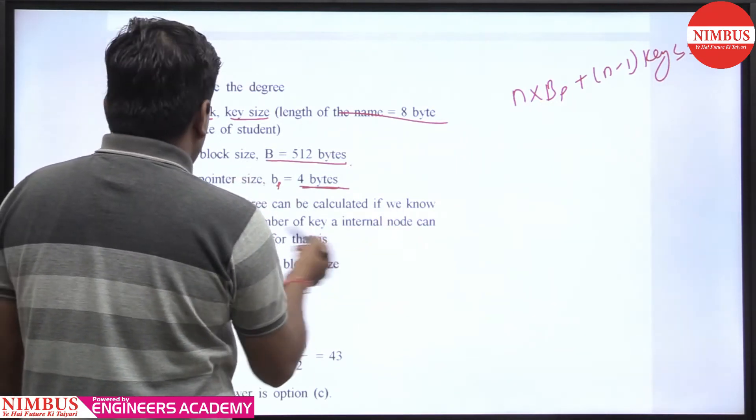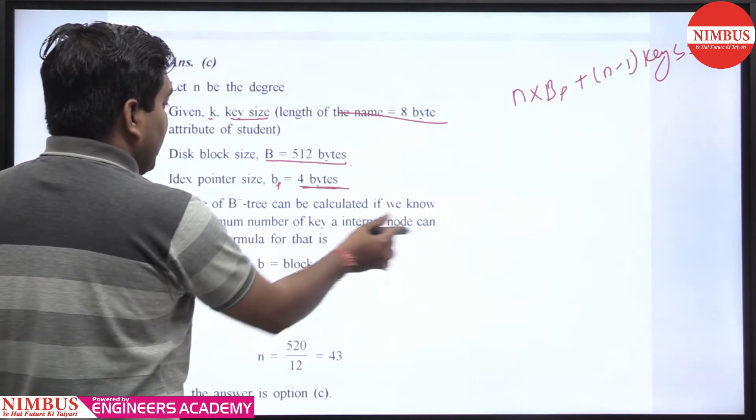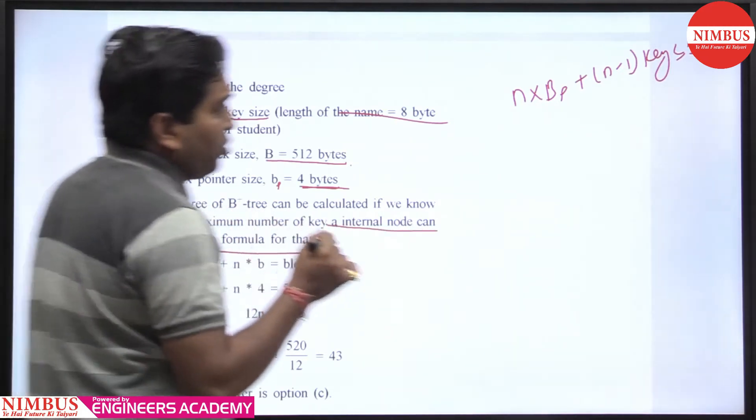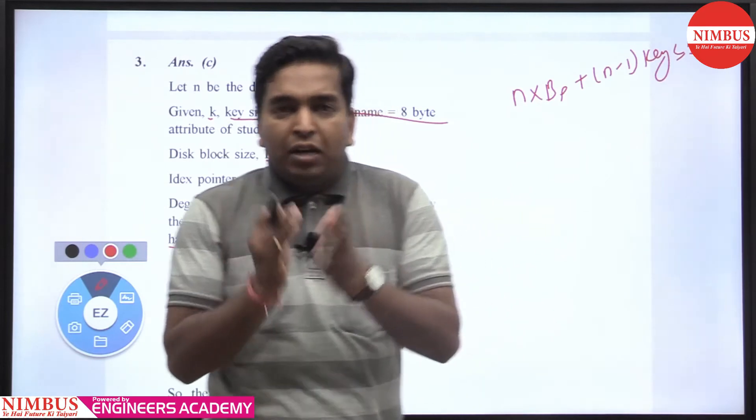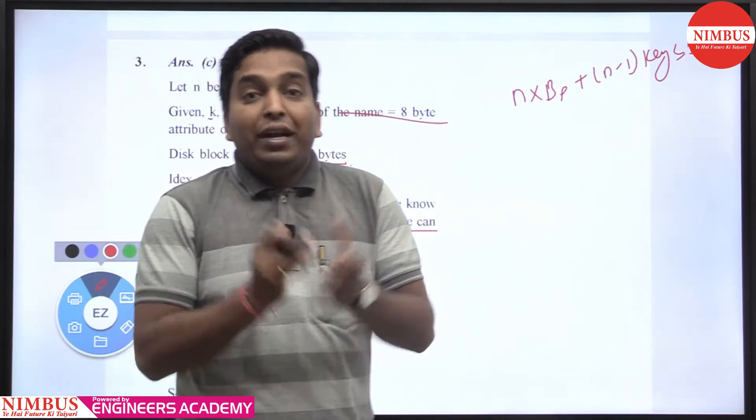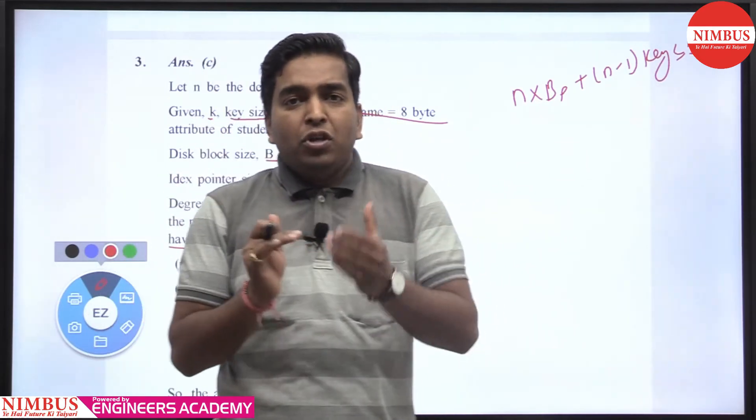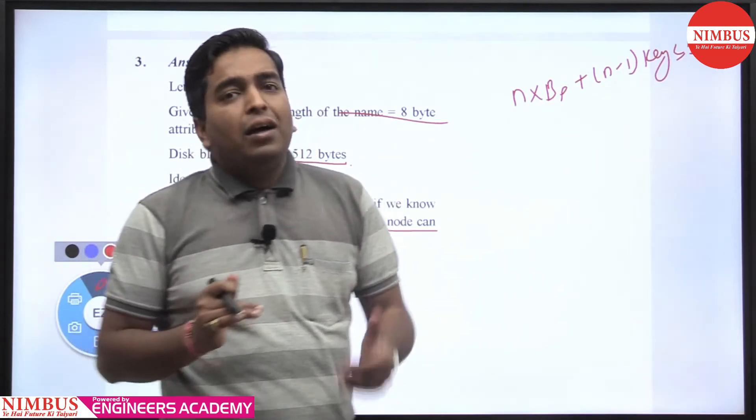We use the formula for internal nodes because in B+ tree, internal nodes do not have any record pointers. They don't have record pointers because all keys are also available in the leaf nodes.